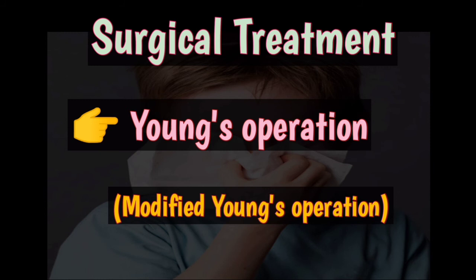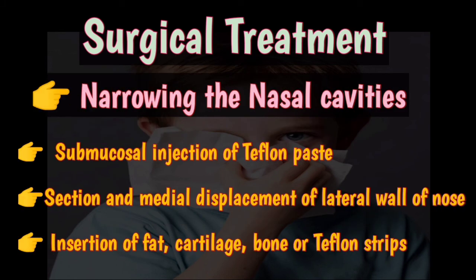Surgical treatment options include Young's operation, in which both nostrils are closed completely just within the nasal vestibule by raising flaps, then opened after six months or later. In these cases, mucosa may revert to normal and crusting is reduced. Modified Young's operation is used to avoid the discomfort of bilateral nasal obstruction; it aims to partially close the nostril and is claimed to give the same benefit. Other surgical procedures to narrow the nasal cavities include submucosal injection of Teflon paste, section and medial displacement of the lateral wall, and insertion of fat, cartilage, bone, or Teflon strips under the mucoperiosteum of the floor and lateral wall of the nose.